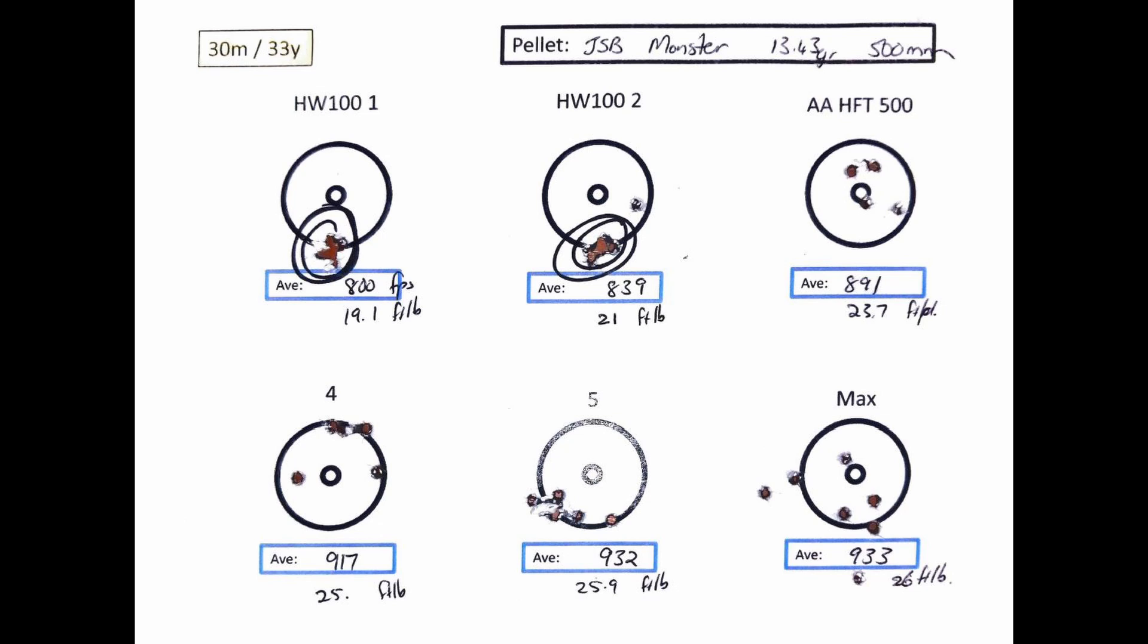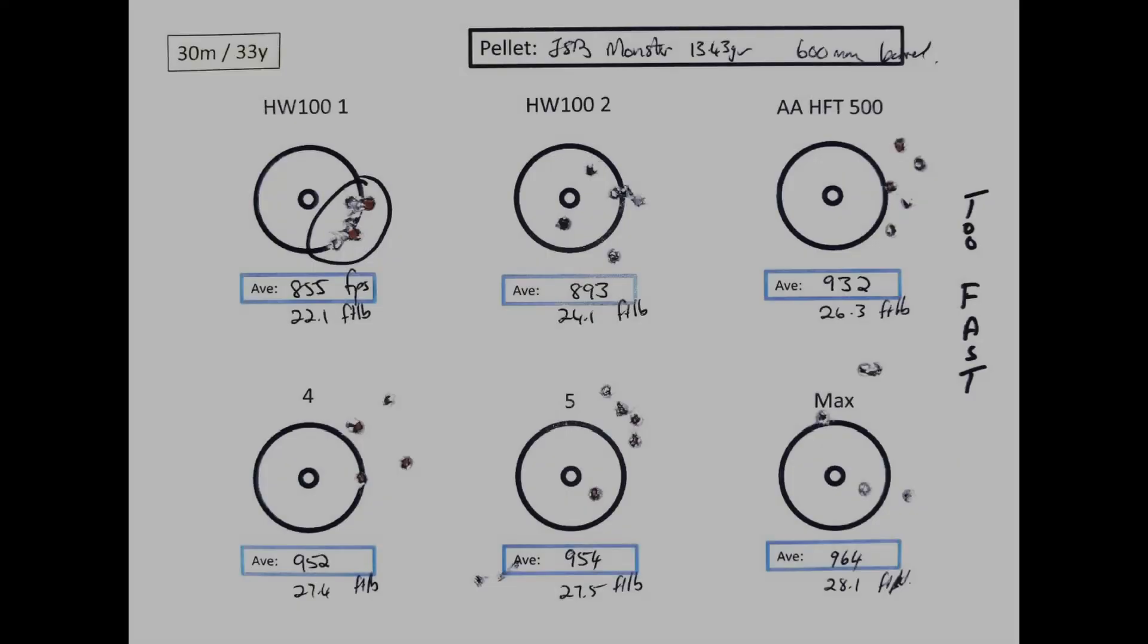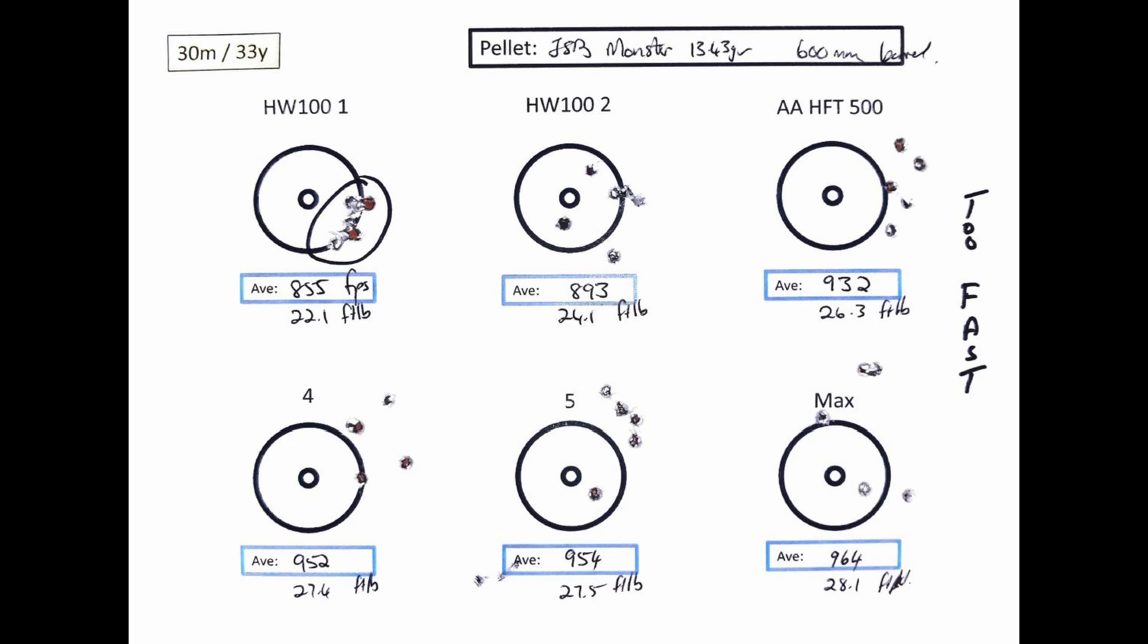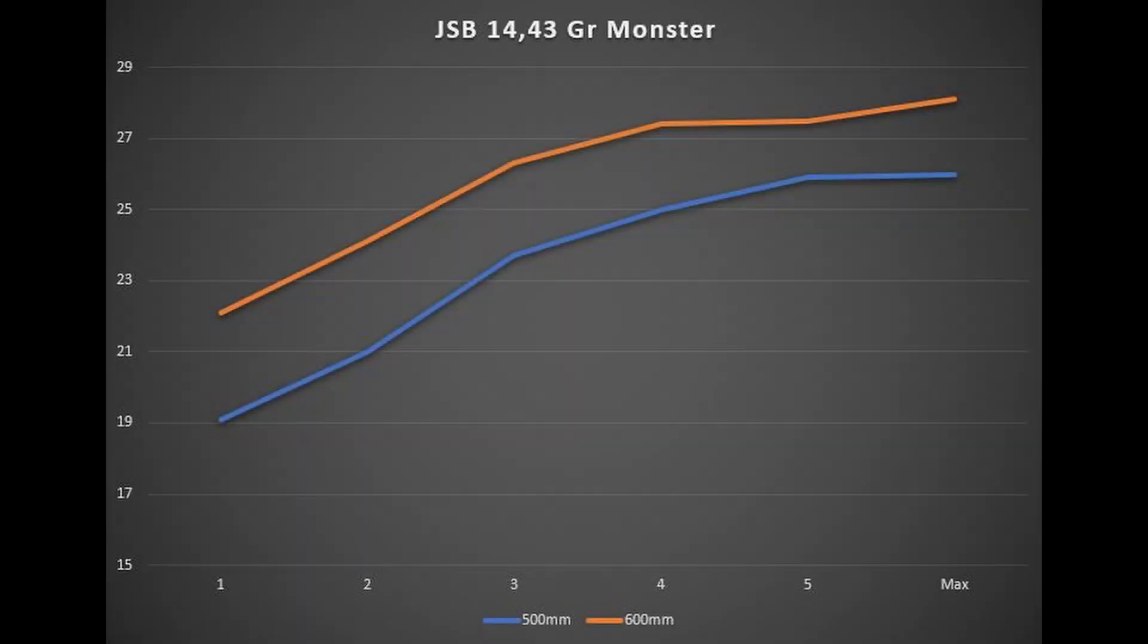But if we look at the difference again between the 500 millimeter barrel and the 600 millimeter barrel, well, the 600 millimeter barrel absolutely hated these pellets as well. They just did not perform at a higher speed—they actually loved the slower speed. Weirdos. The difference in power between the two was quite significant, with about a two foot-pound spread from bottom to top all the way right through.